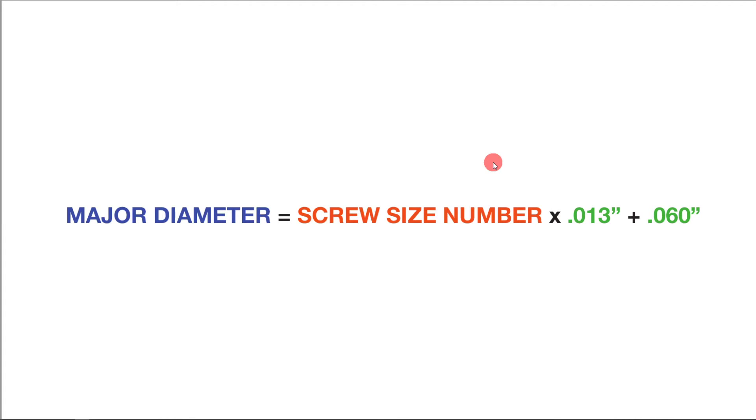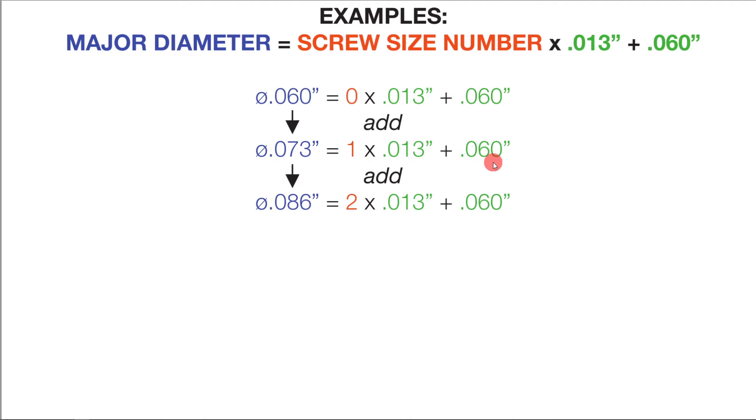So this is the formula again that we looked over and here is our first example. When you have a number zero screw, you multiply zero times thirteen thousandths, and as we all know this equals zero. So you just add sixty thousandths, meaning that a number zero screw is sixty thousandths in major diameter.